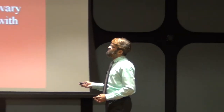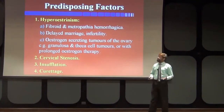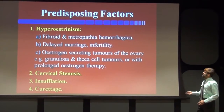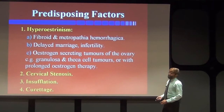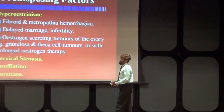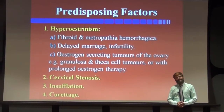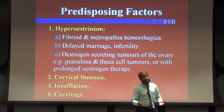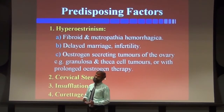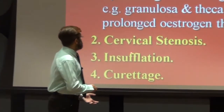Estrogen-secreting tumours, though rare, such as granulosa cell and theca cell tumours, or exogenous estrogen given for treatment — prolonged estrogen therapy like HRT (hormone replacement therapy) — may lead to endometriosis in the future. Another predisposing factor is cervical stenosis, which may lead to retrograde menstruation and has been identified as a cause leading to endometriosis.